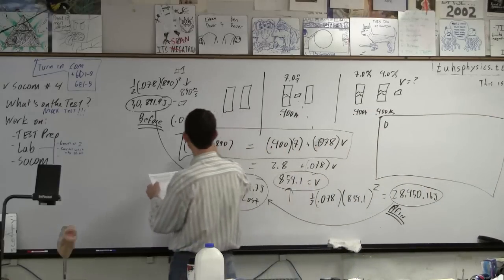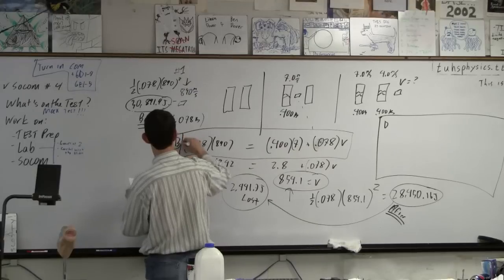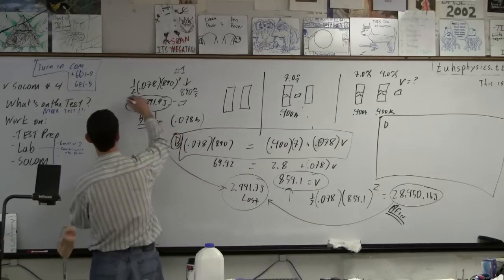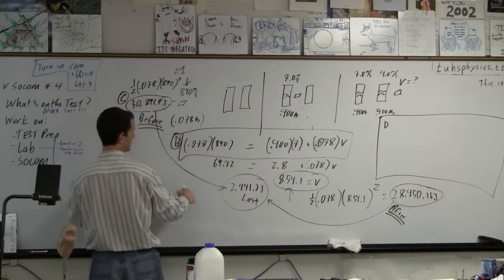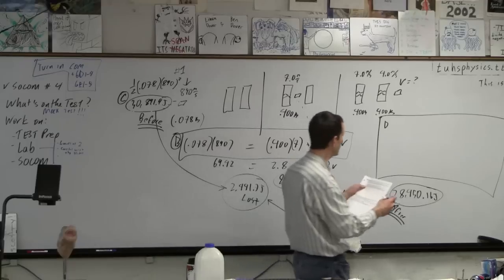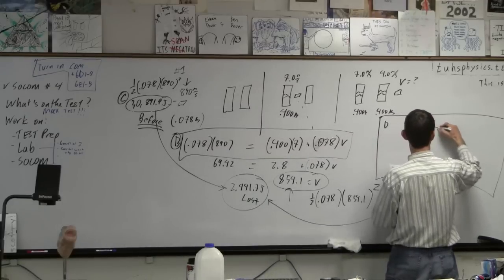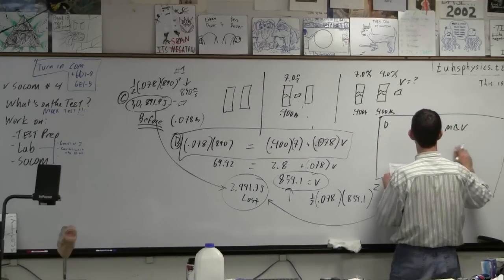This is B here. This is C here, this thing, right? Here's D. Let's do D over here. This is going to be a force times time equals mass change in velocity. Don't try to use energy.